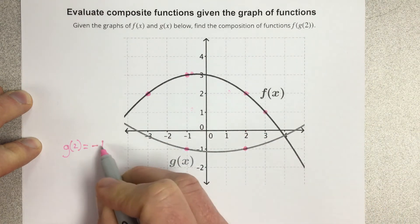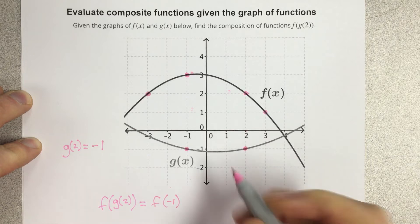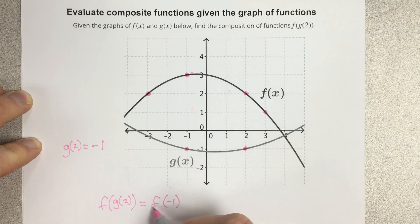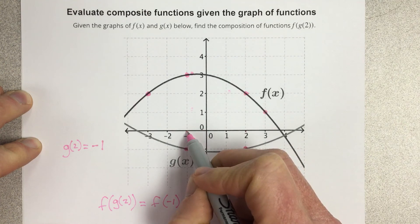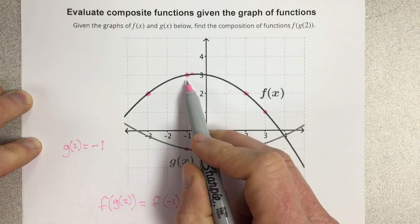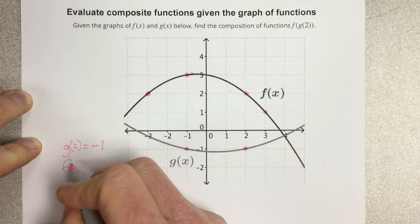So if I take that negative 1 and I replace g of 2 here, that would give us f of negative 1. So now I need to figure out what the f function is outputting at negative 1. So I go to negative 1, and then I move up until I touch the f of x function, which you can see is at 3. So f of negative 1 is equal to 3.